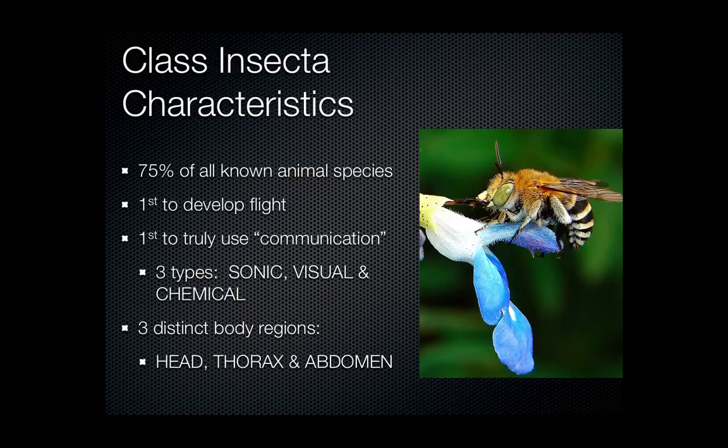Another characteristic of insects is that they have a head, a thorax, and an abdomen — three body regions. This is really the only group that does that. Both crustaceans and arachnids had a cephalothorax and an abdomen, just two parts. But insects have a three-part body.